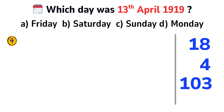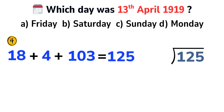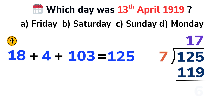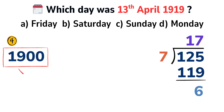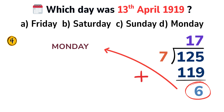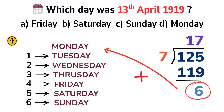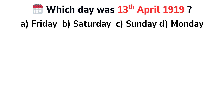Add everything together and divide by 7: 18 plus 4 plus 103 equals 125. Divide 125 by 7 — 7 times 17 equals 119, so the remainder is 6. The century here is the 1900s, and from our chart the century base day is Monday. Count 6 days forward from Monday: Tuesday, Wednesday, Thursday, Friday, Saturday, Sunday. The answer is Sunday, option C.